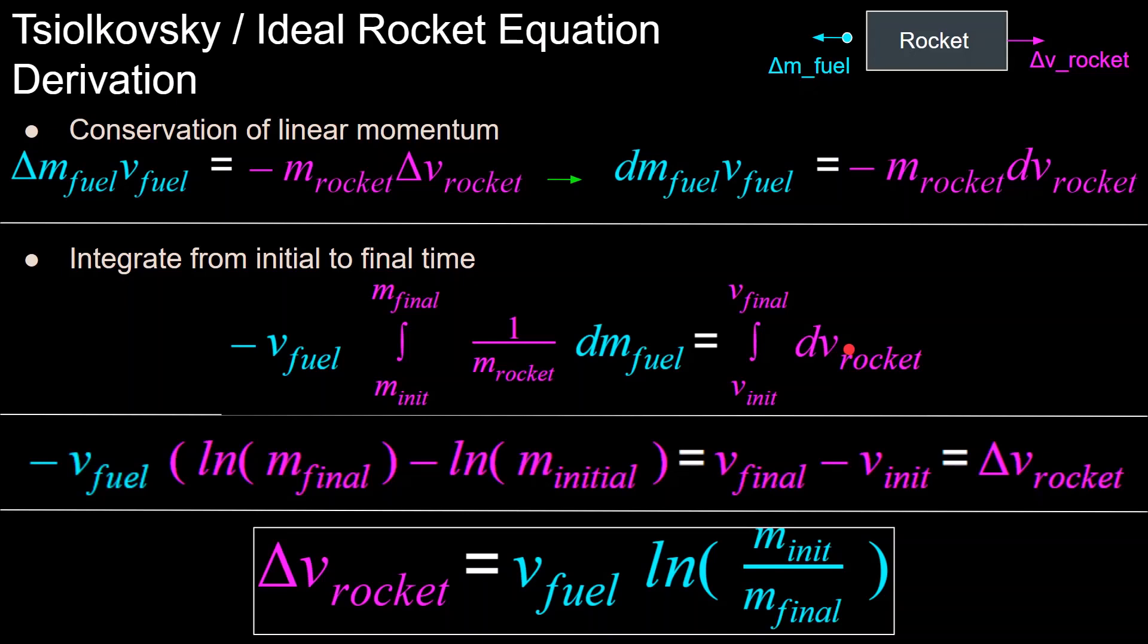When we evaluate the integrals, we recall from calculus that the integral of one over X is the natural log of X. We have the natural log of M final over M initial when evaluated. On the right side, we have the final velocity of the rocket minus the initial velocity of the rocket, which itself is the definition of delta V, the change in velocity. Using some principles of logs, we distribute the negative sign and rearrange to arrive at the most fundamental equation in all of rocket science: delta V of the rocket equals the velocity of the fuel coming out times the natural log of the initial mass over the final mass of the rocket.